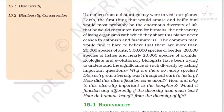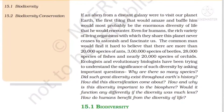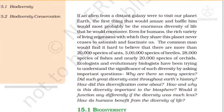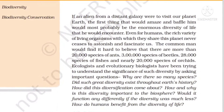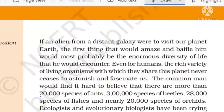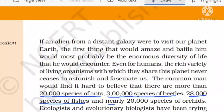We know so much diversity is present on our earth. If we just try to see, we will find nearly 20,000 species of ants are present, nearly three lakh species of beetles, 28,000 species of fishes, and nearly 20,000 species of orchids. This much diversity is present on the earth.